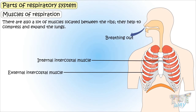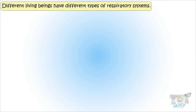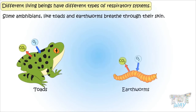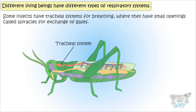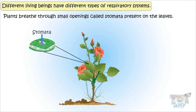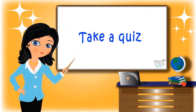So kids, today we learned about the respiratory system in humans. Different living beings have different types of respiratory systems. Fish breathe through gills and not through lungs. Some amphibians like toads, and earthworms, breathe through their skin. Some insects have tracheal systems for breathing, with small openings called spiracles for exchange of gases. Even plants breathe — through small openings called stomata present on the leaves. All living organisms breathe, and there are different types of systems for their breathing. Now go ahead and take a quiz to learn more.